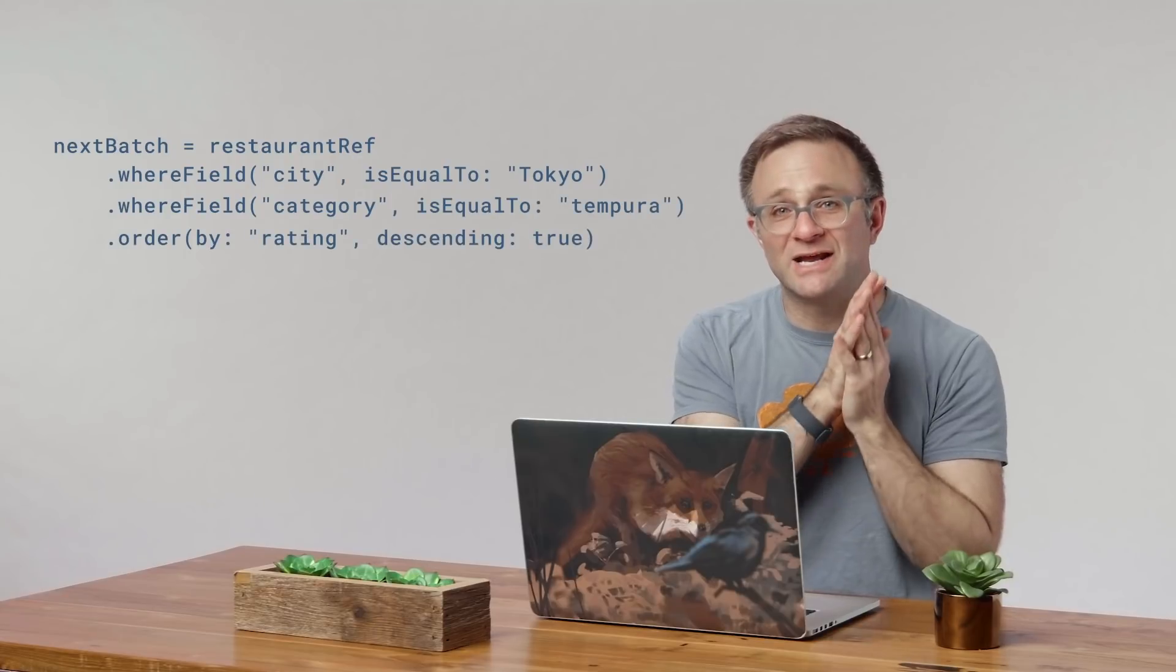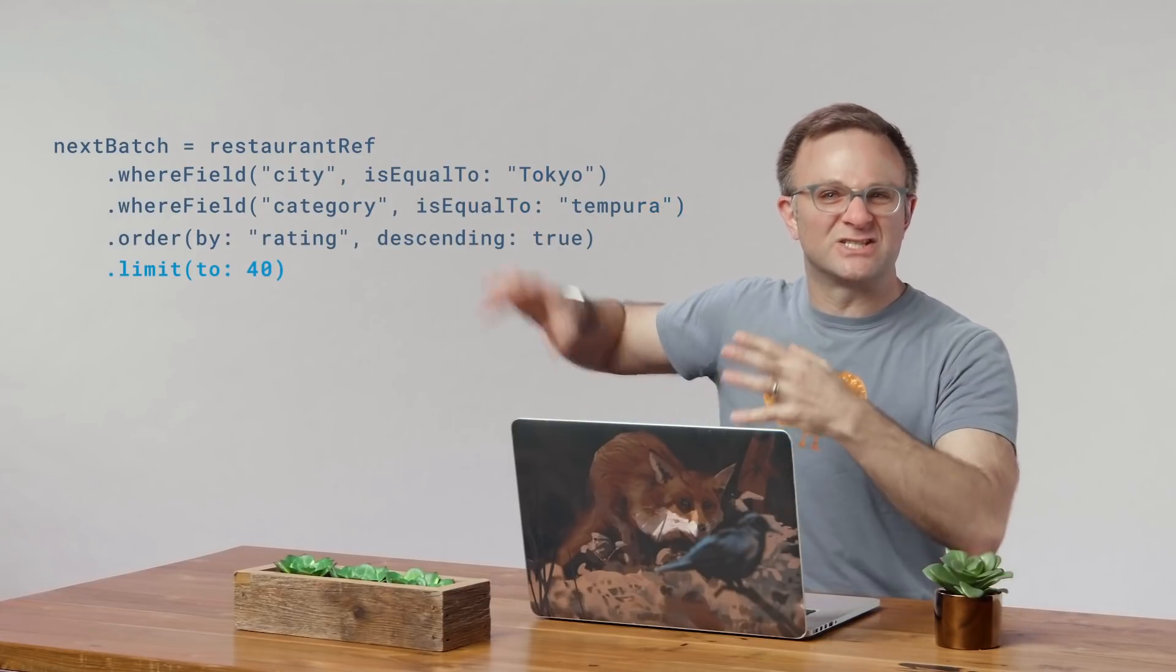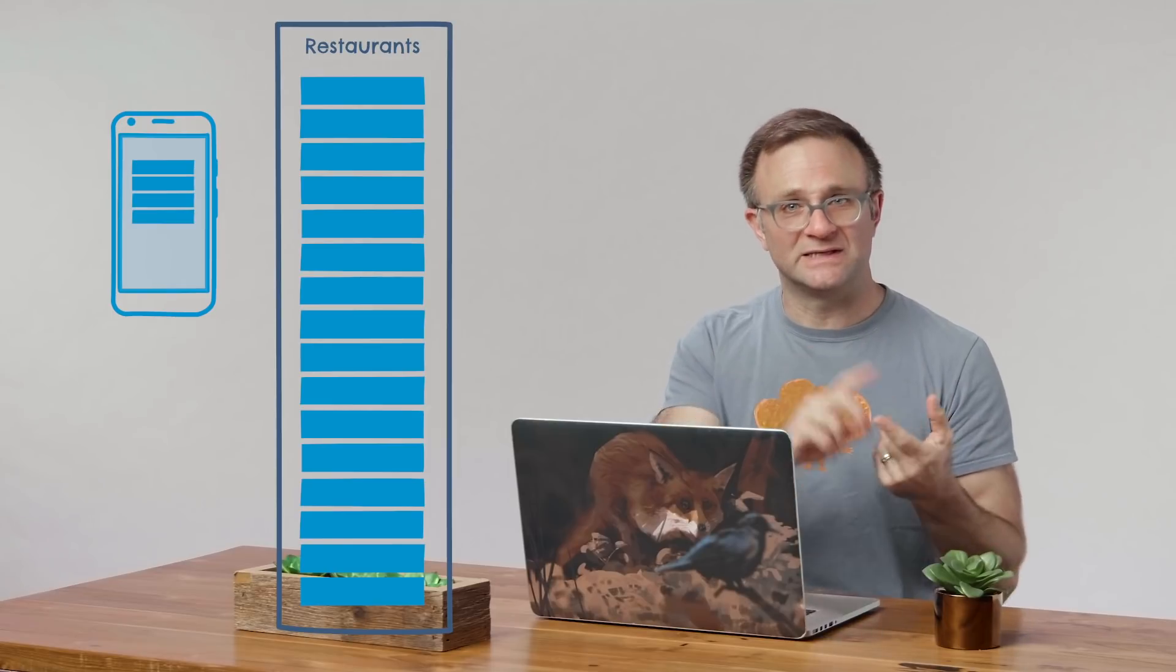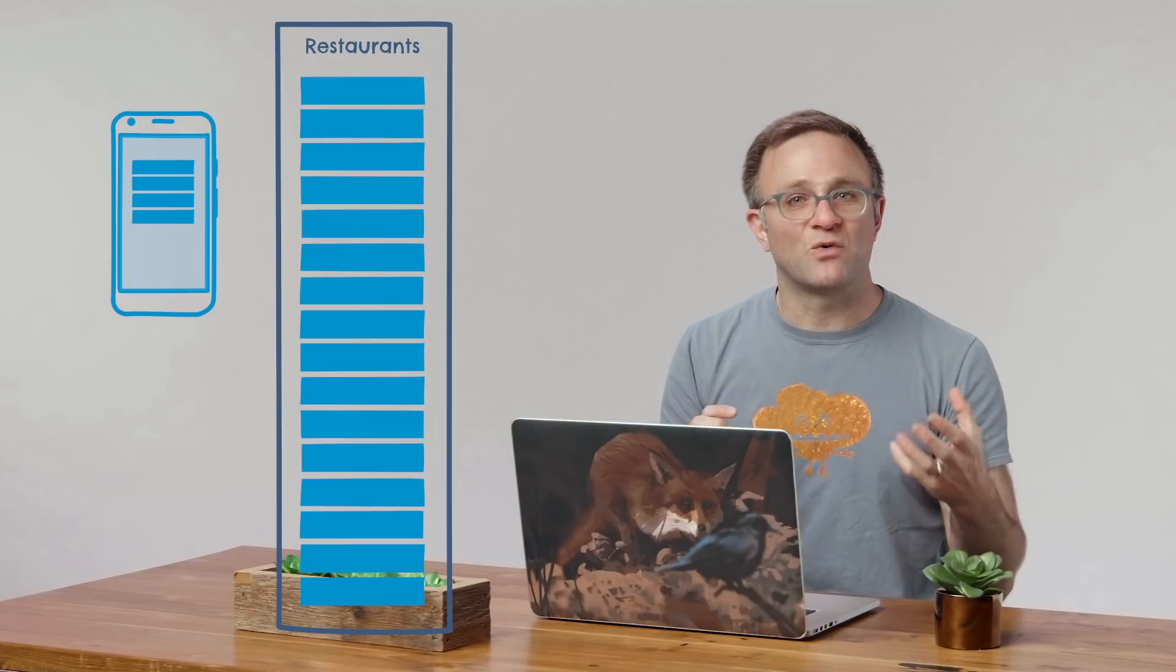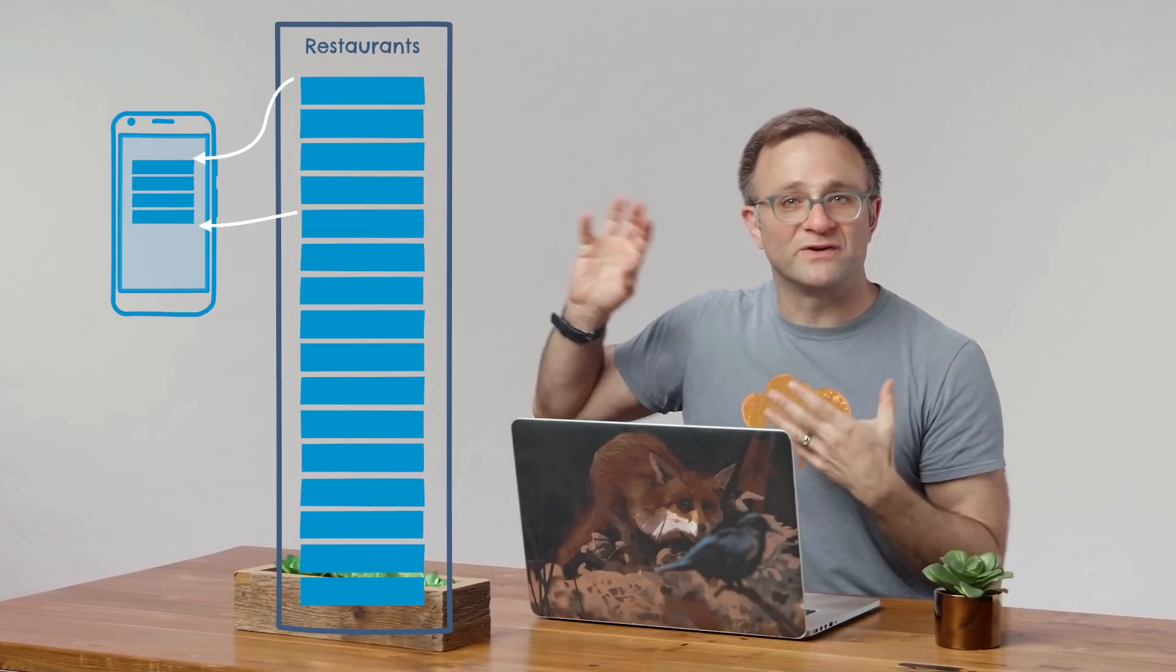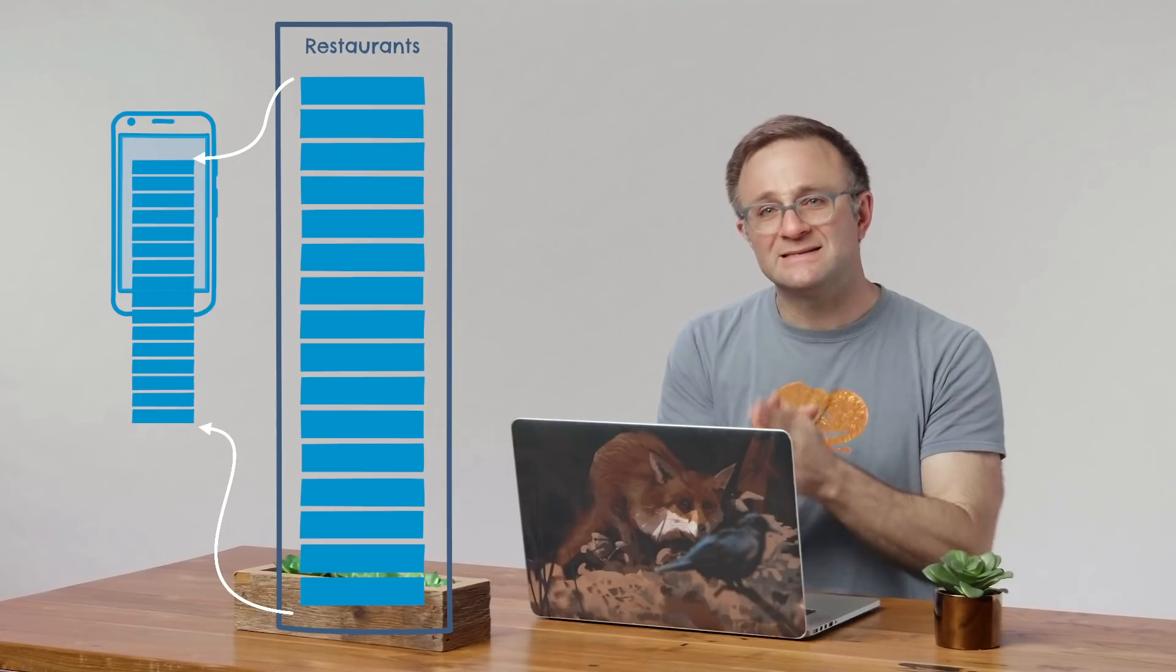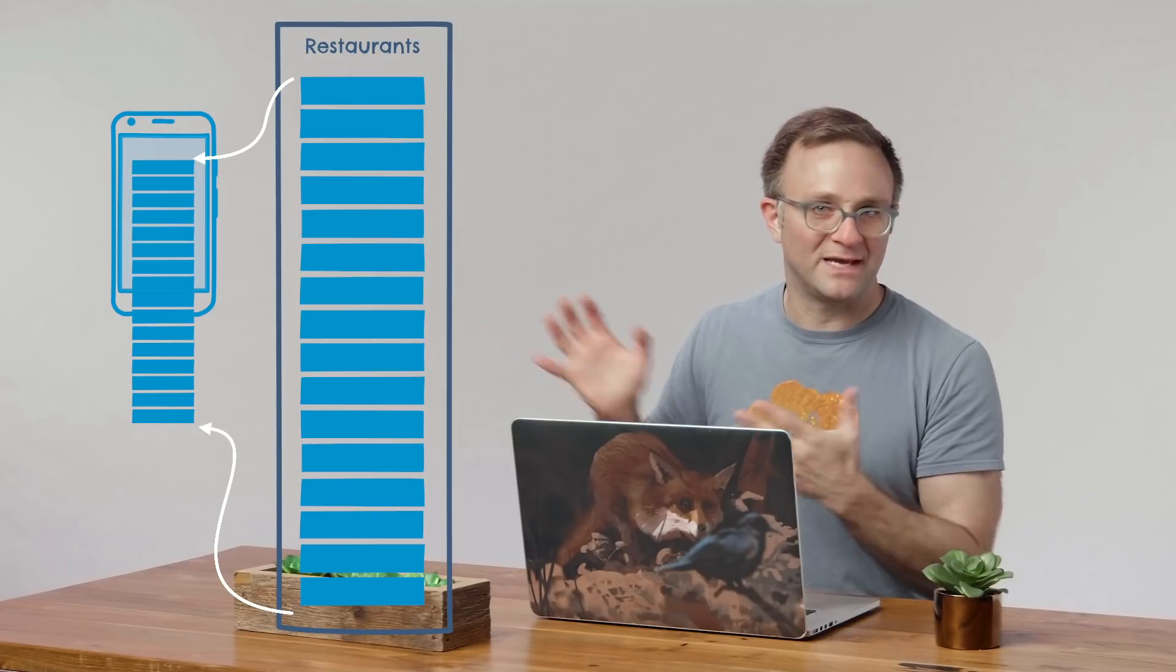Now, a third option would be to actually not paginate at all, but just rerun the original query to start from the beginning and just keep increasing the limit so we get more and more results every time. This will work, and it's probably the easiest solution that accurately handles inserts, deletes, and documents moving around in your collection. But it also means that every time you request a new batch of data, you're basically re-requesting all the old data you retrieved previously, and you get charged for all those reads, which kind of defeats the whole purpose for adding pagination in the first place. Still, this isn't a terrible option if you want to keep the real-timiness and don't think you're going to go past, say, three or four pages.